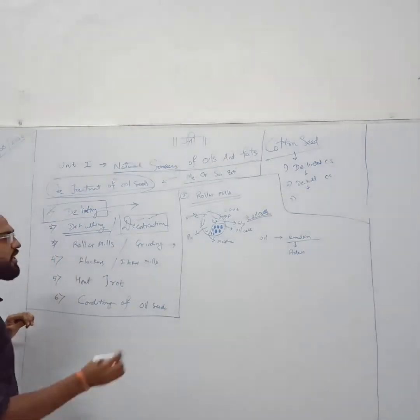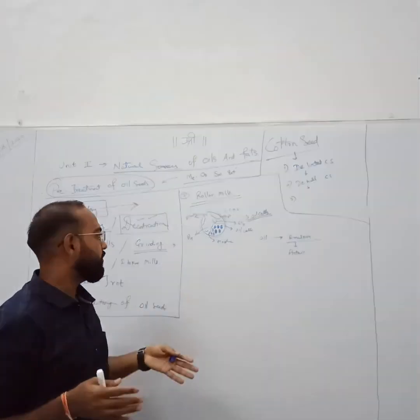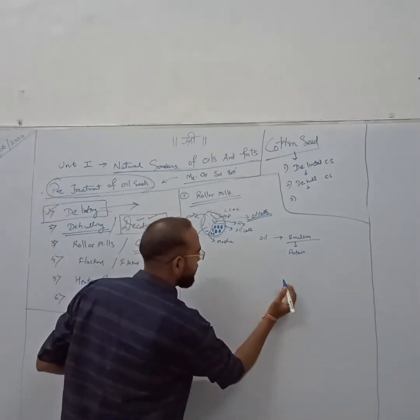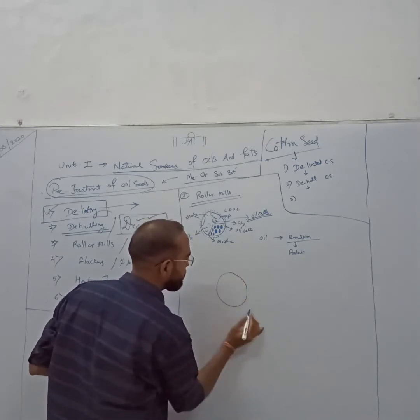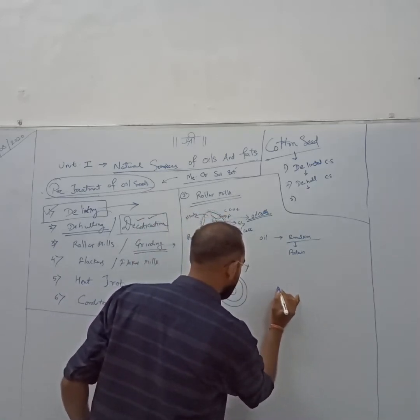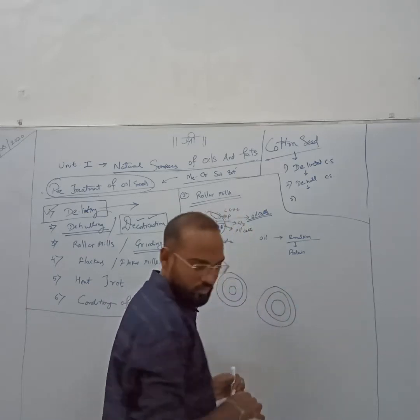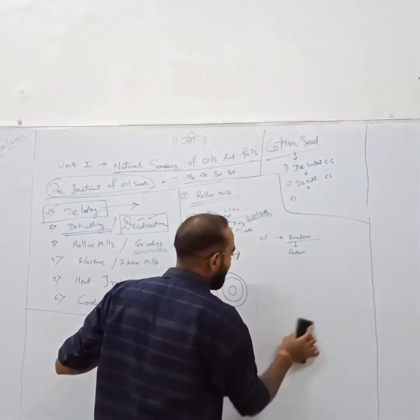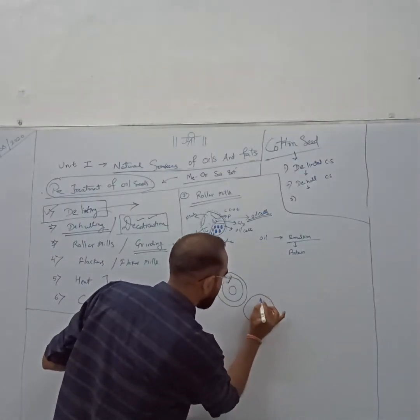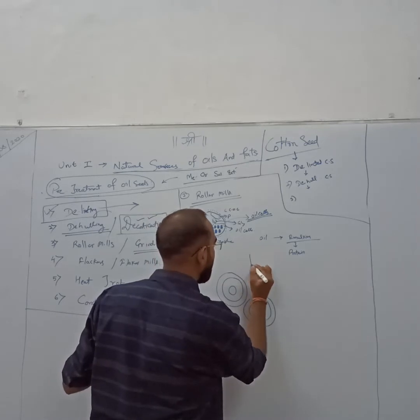Just consider that this is the seed before the operation of the roller mill. This is the actual seed where the oil cells are present. Now when it is sent to the roller mills, in roller milling it is crushed. It is going for crushing or grinding. This is the diagram of 2 pass roller.